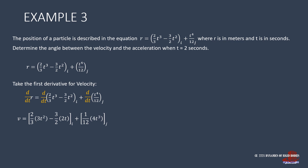The derivative of (2/3)t³ is (2/3) times 3t² minus (3/2) times the derivative of t², which is 2t. For j, the derivative of t⁴ over 12 is (1/12) times 4t³. Simplifying the whole equation gives v equal to 2t² minus 3t for i plus t³ over 3 for j.